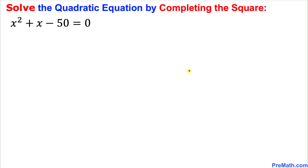Welcome to pre-math. In this video tutorial we are going to solve a given quadratic equation by completing the square method. The very first thing we are going to do is make sure that only X variables are on the left hand side. That means this constant, negative 50, must go on the other side, so we are going to have X squared plus X equals...